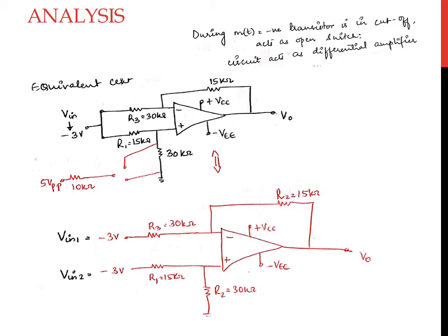During the negative half cycle of M(t), the NPN transistor will operate as an open switch since it is in the cut-off region. The base-emitter junction and the base-collector junction are reverse biased. Since it is acting as an open circuit, the equivalent circuit will be a differential amplifier circuit.